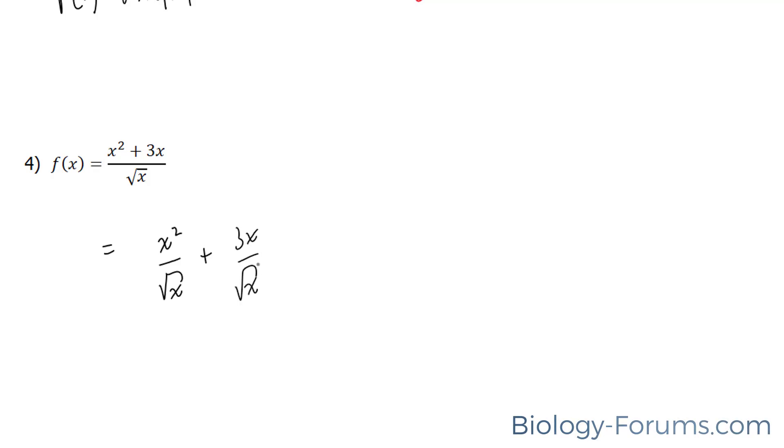Now, that being said, we can change this into exponential form, like so, x to the power of half. We can change this format so that it looks like this: x squared times x to the power of negative half. And similarly, 3x times x to the power of negative half.